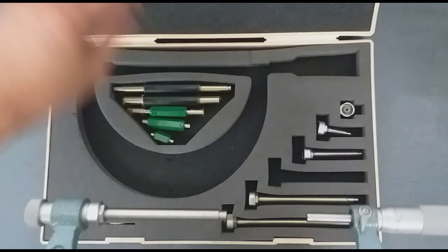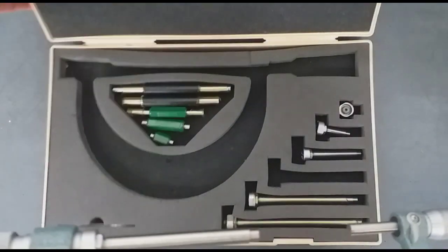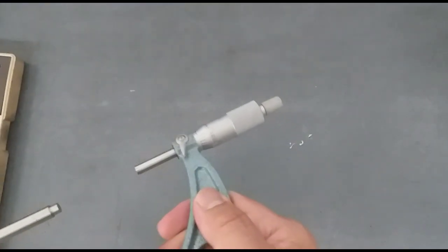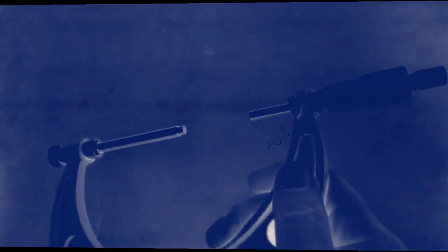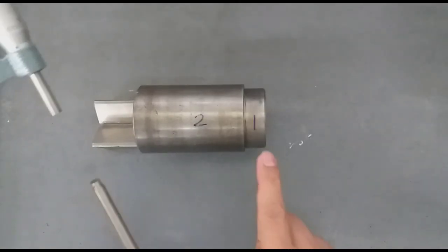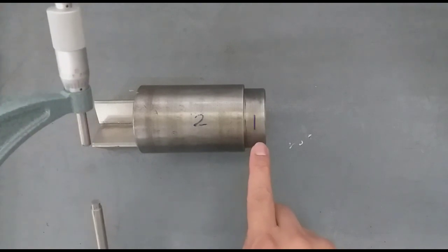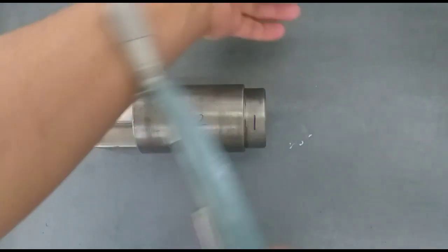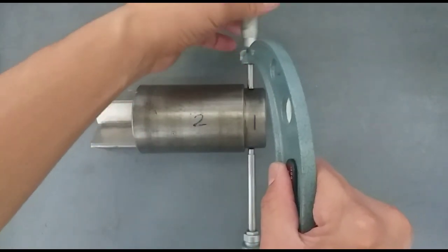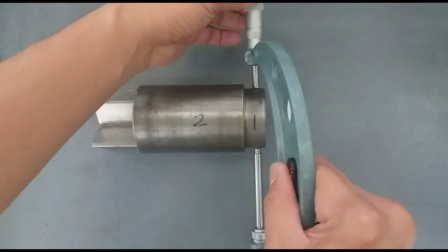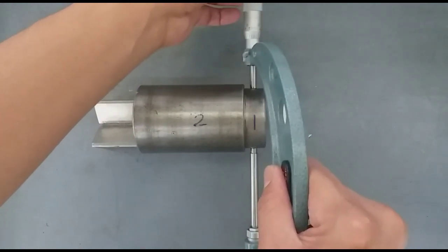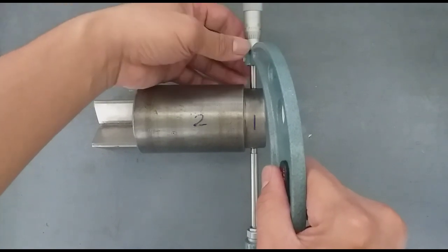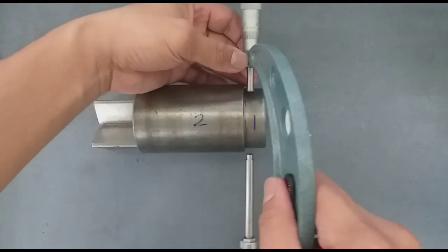This is how to use a micrometer for outside diameter. Give a little bit of pressure until you hear the sound from the ratchet. That's enough.